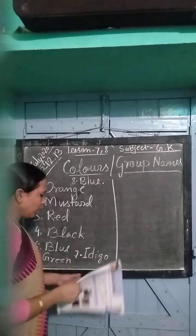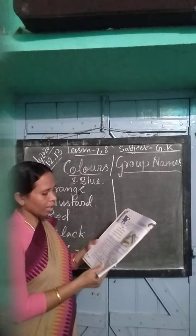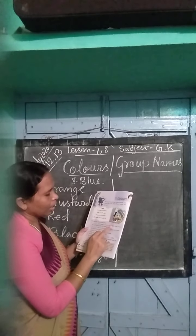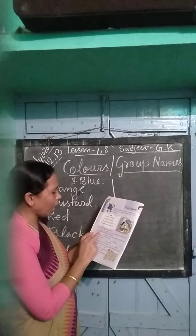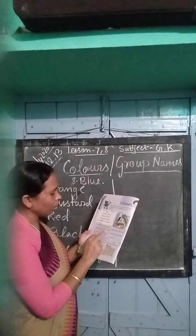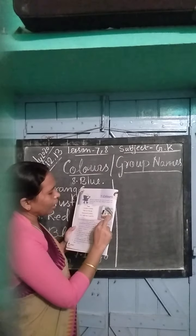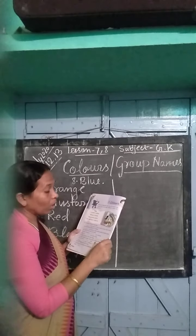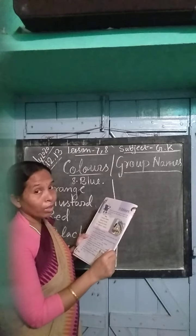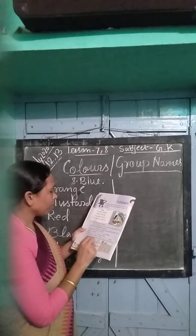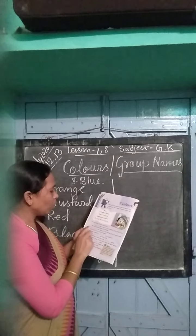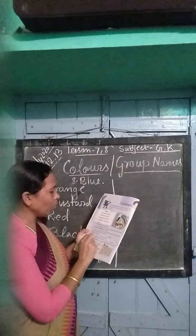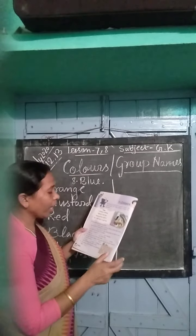I write here the answer. Now I will read. Orange is the name of a fruit as well as a color that comes between red and yellow in a rainbow. You will see nicely — in a rainbow, in the middle, between yellow and red we can see orange.